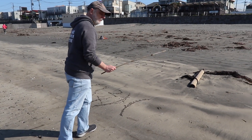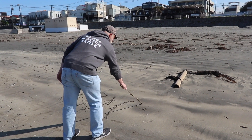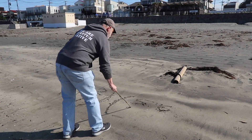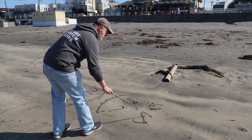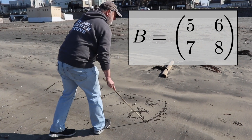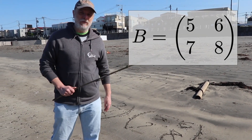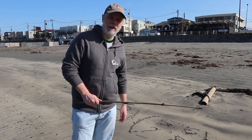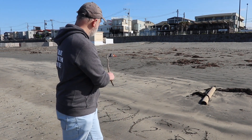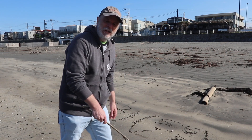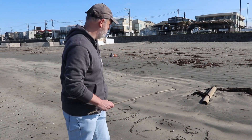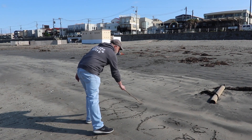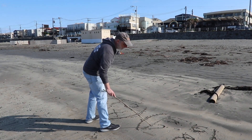We're going to do another matrix. Let's put in some different numbers: 5, 6, 7, 8. Now the way we do matrix multiplication is we're going to do the same thing that we did with the dot product, but we're going to go for each row and each column in the matrix. So the first thing we're going to do is the first row times the first column.